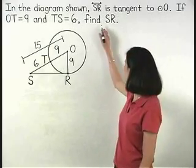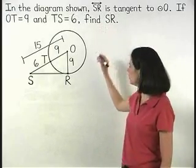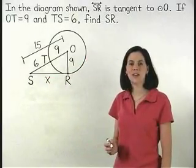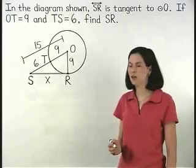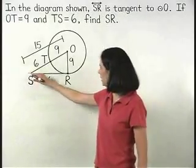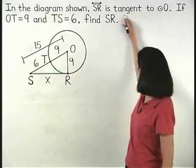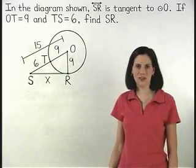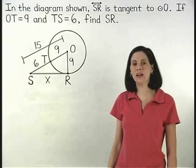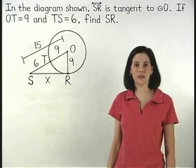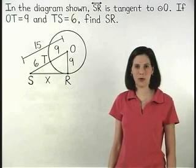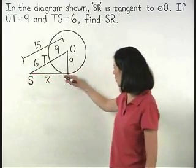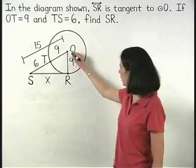Now we are asked to find SR, so let's use X to represent the length of segment SR. To find the value of X, notice that we are given that line SR is tangent to circle O. Remember that if a line is tangent to a circle, then the line is perpendicular to the radius of the circle drawn to the point of tangency. So we know that line SR is perpendicular to radius OR.